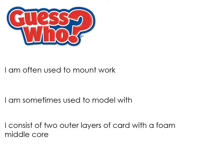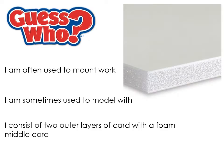The first material is often used to mount work on. It's sometimes used to make models, specifically things like architectural models, and it consists of two outer layers of card with a foam middle core. It's foam board.